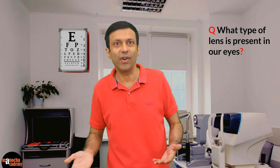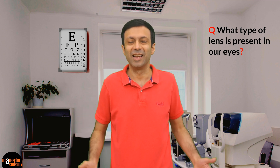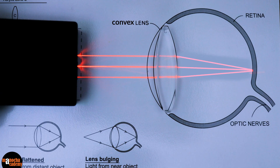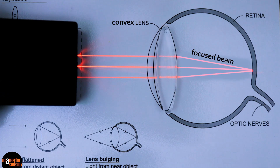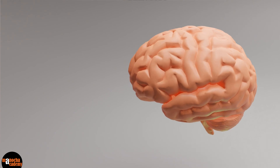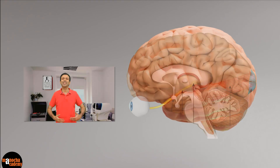Do you know what type of lens is present in our eyes — is it a convex or concave lens? That's right, it is a convex lens, because a convex lens is a converging lens. So let's place a convex lens here in the eye. Now you can see that the convex lens helps to focus the light rays on the retina, and we can see a clear image. Signals are sent to the brain via the optic nerve, and our brain interprets the image.